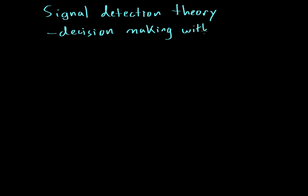In this video, I'm going to be talking about something known as signal detection theory. Signal detection theory basically looks to see how we make decisions under conditions of uncertainty.